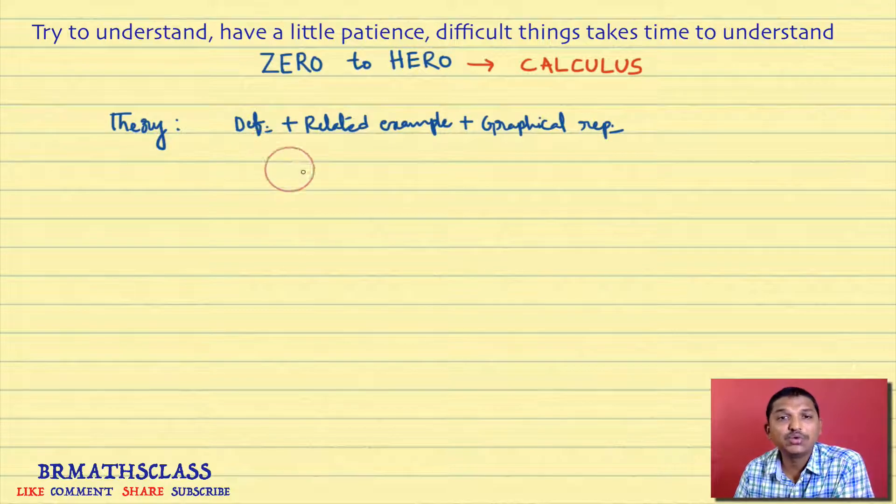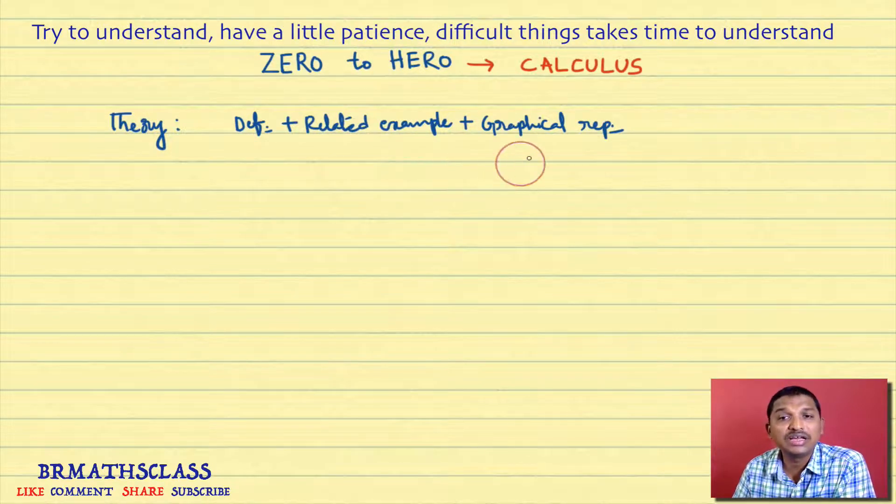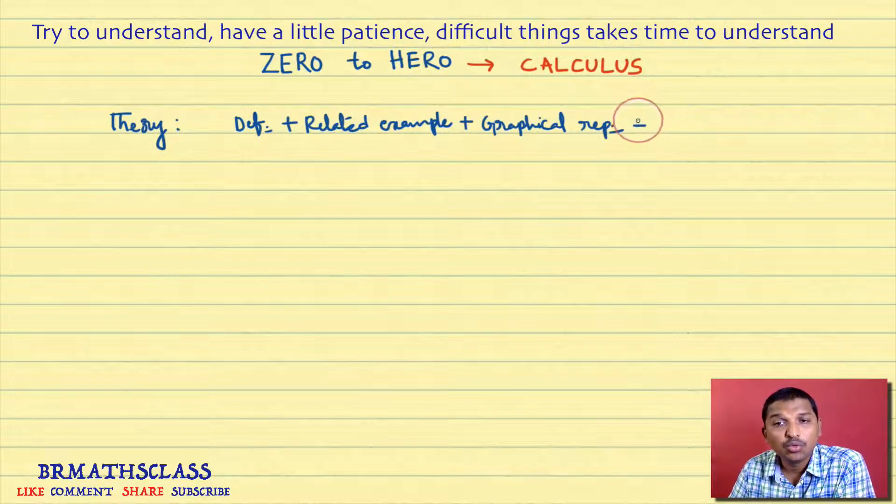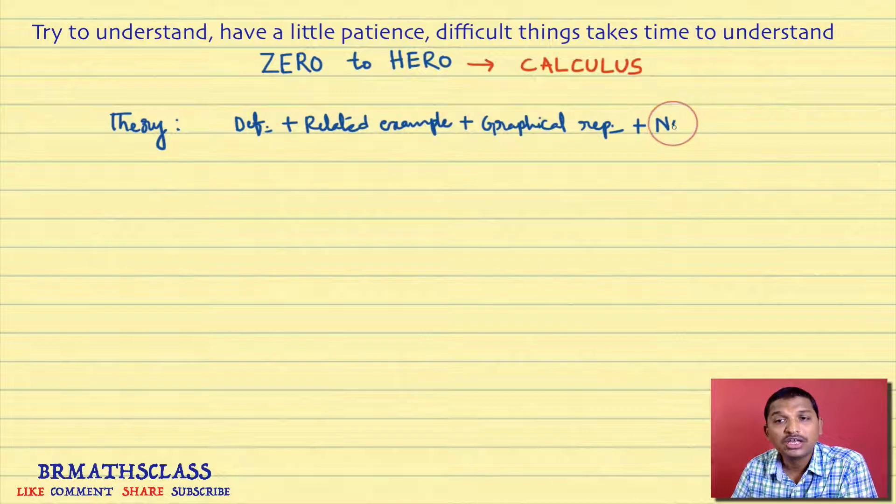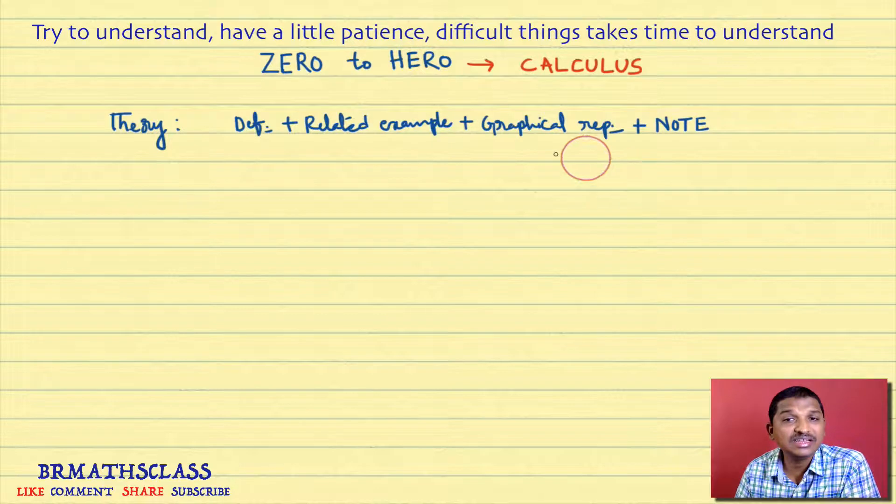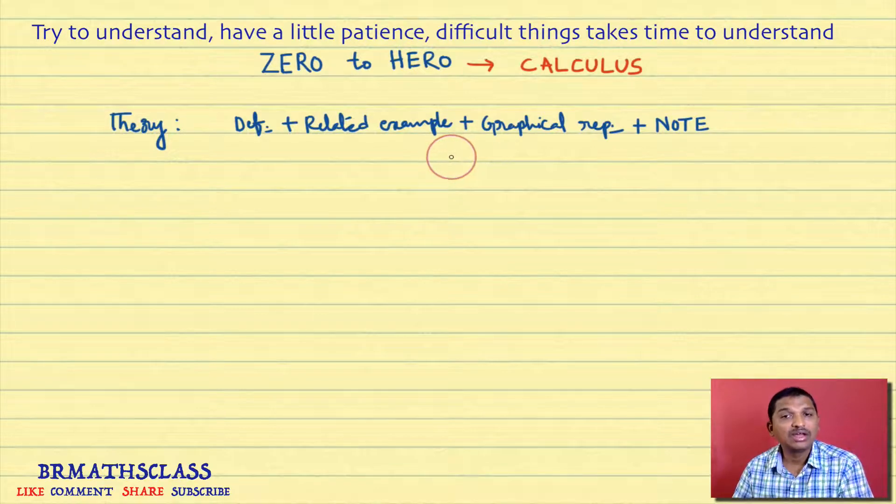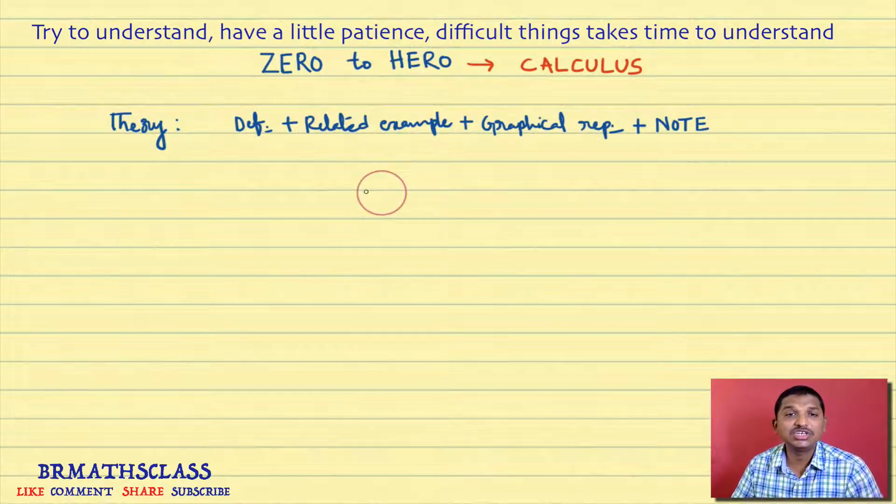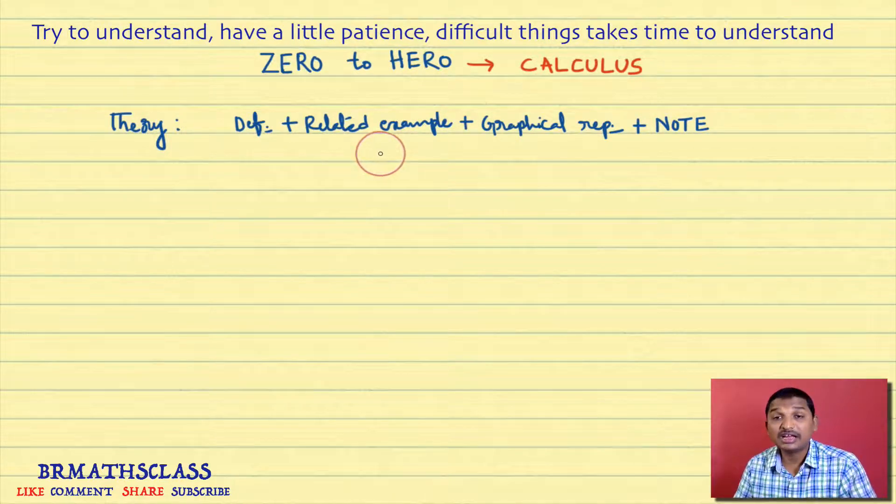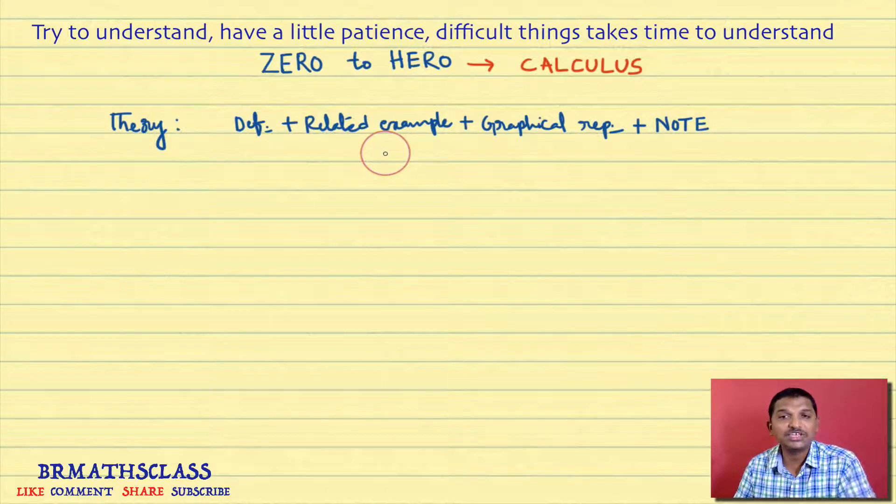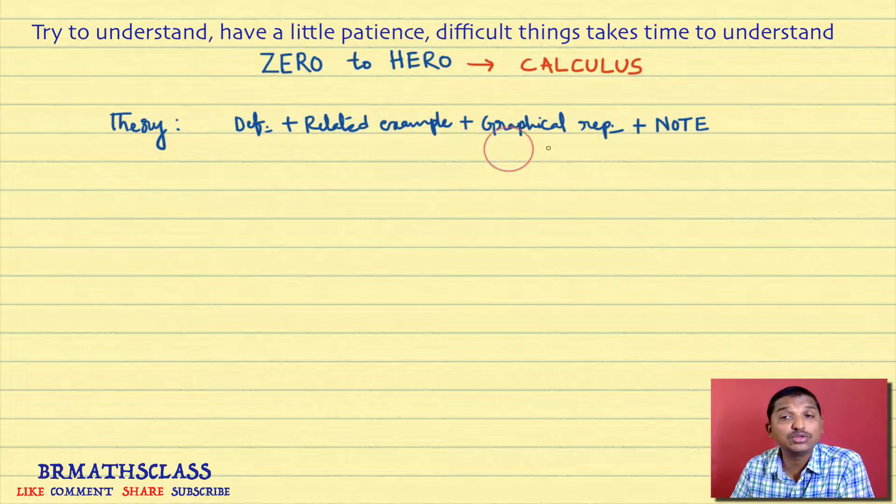Once the definition is over, related examples are over, graphical representation is over, whatever the important points we need to observe in the definition, I'll give in the form of a note. Do not neglect this note. These notes are the key points in this definition. Like this, for every definition, we are going to learn that definition, related examples, graphical representation, and key points.